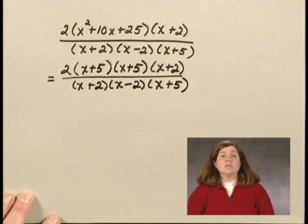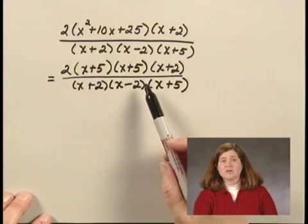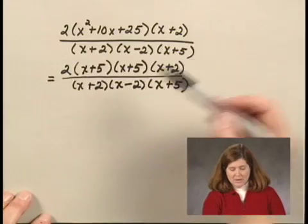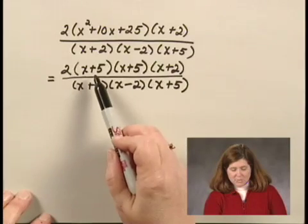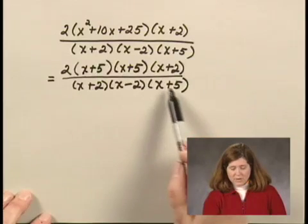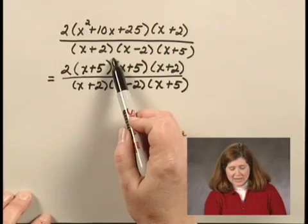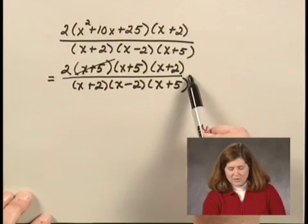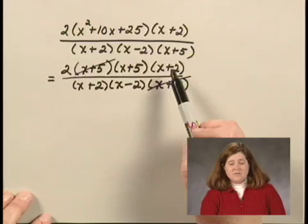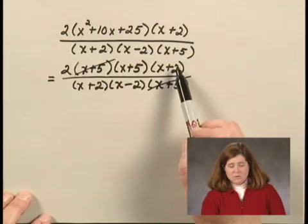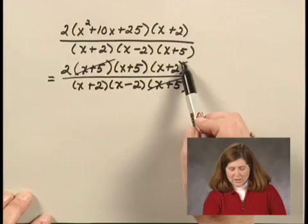Now that it's completely factored, I identify any factors that are in common with the numerator and the denominator. There is a factor of x plus 5 in the numerator and one of them in the denominator, so I can cancel them. That's the same as removing a factor equal to 1. There is also a factor of x plus 2 common to the numerator and the denominator, so I can cancel those.